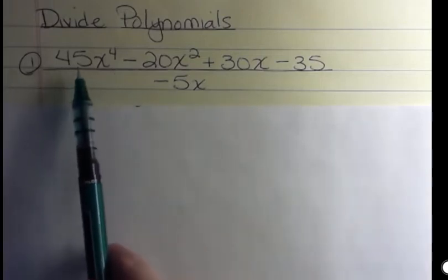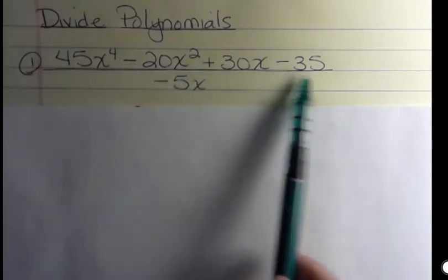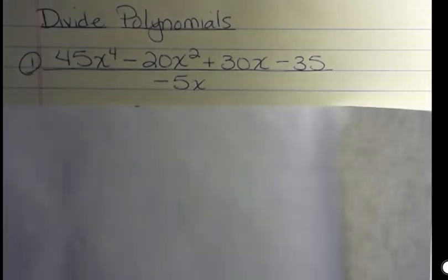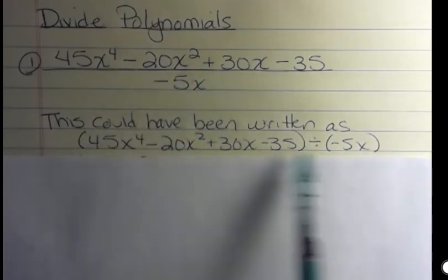This is saying that 45x to the 4th minus 20x squared plus 30x minus 35 is being divided by negative 5x. And so that could have been written, same problem, could have been written this way. So you'll see sometimes it's written this way as a fraction, and sometimes it's written this way as an older division problem.